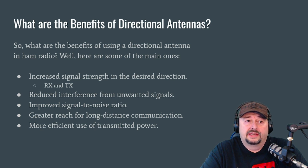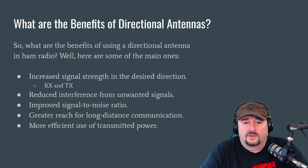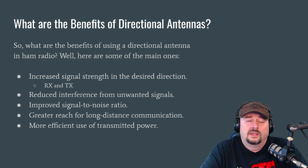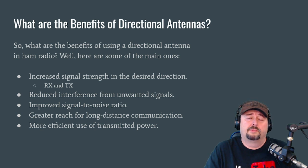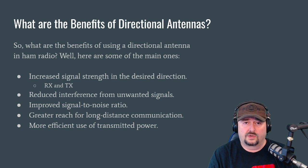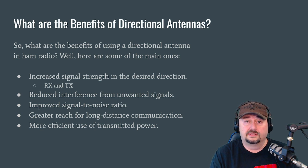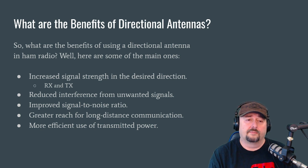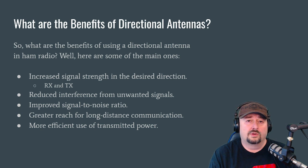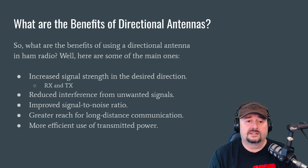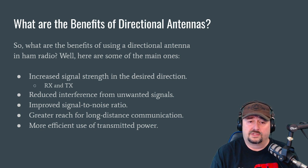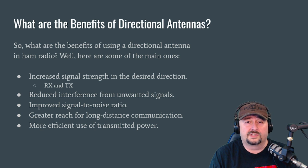At this point you're probably asking, what are the benefits of directional antennas? The first main benefit is increased signal strength in the desired direction — for both receiving and transmitting. A second benefit is reduced interference from unwanted signals. Because we're focusing our energy in a particular direction, our antenna performs at a lower level in other directions, so we pick up unwanted stations at a lower level than we would with an omnidirectional antenna.